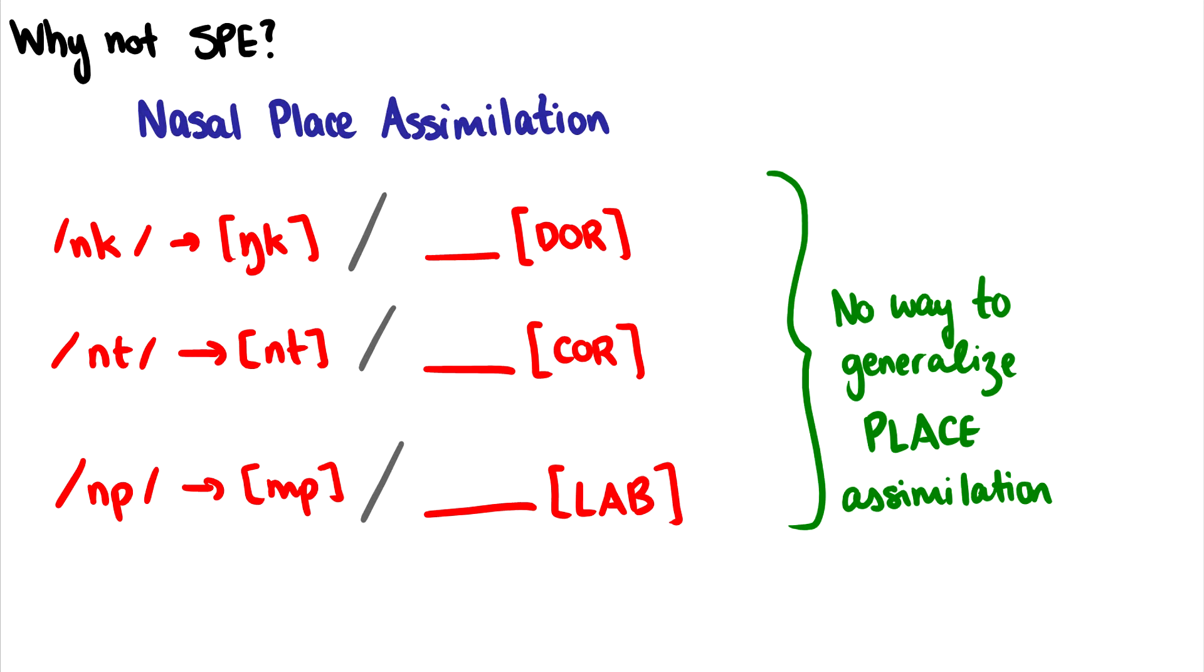So what is nasal place assimilation? Well, I want to write some words out. So I want to write the words ink, intelligent, and the word input. In fact, I always spell input incorrectly because of the phonology going on. So what's happening? Well, in the word ink, that N is not an N. It is a velar N, so ink. It is the same one in the first rule, ink. It is assimilating to the place of the K. So this alveolar N becomes a velar N before a velar.